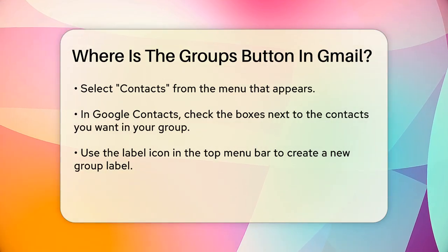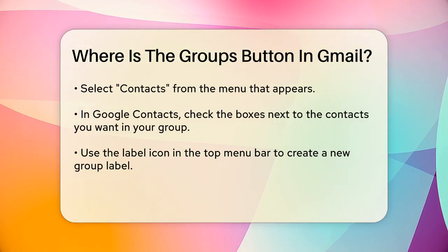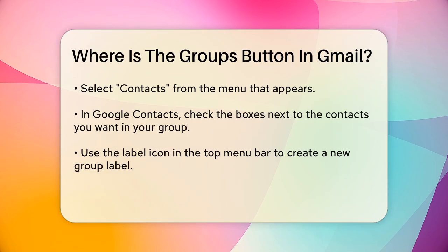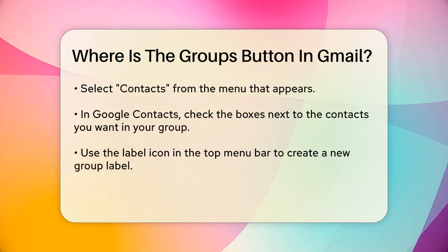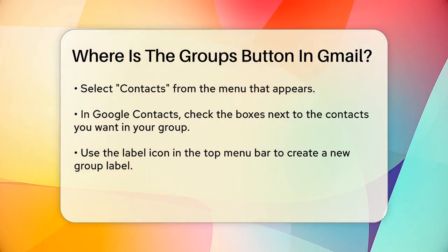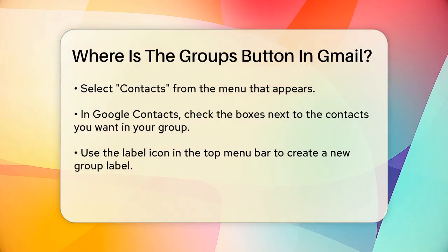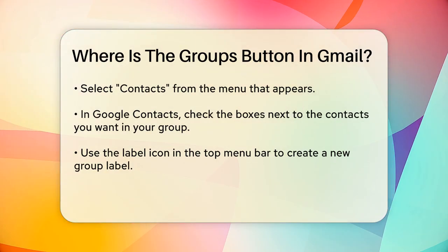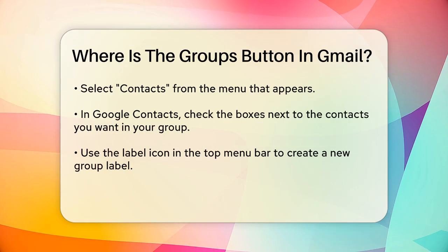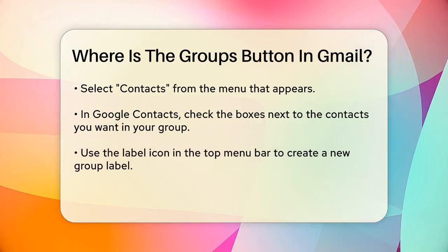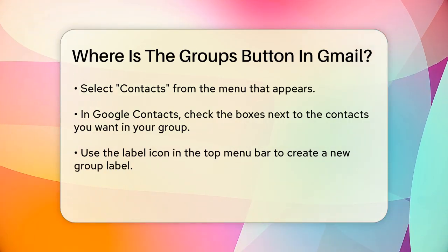Once you're in Google Contacts, you can select the contacts you want to include in your group by checking the boxes next to their names. Then go to the top menu bar, click on the label icon, and select 'Create Label' to name your new group.